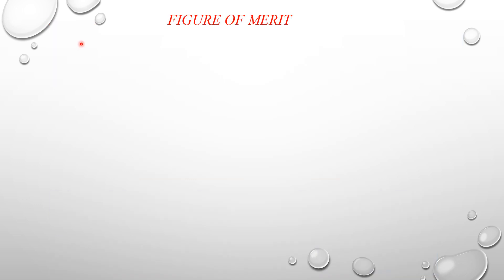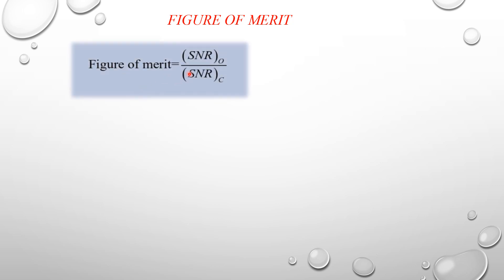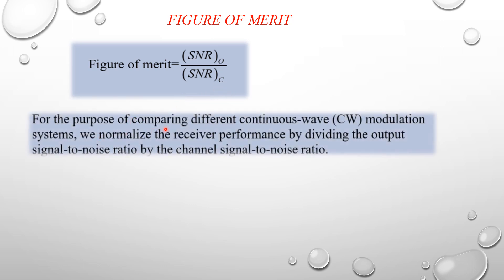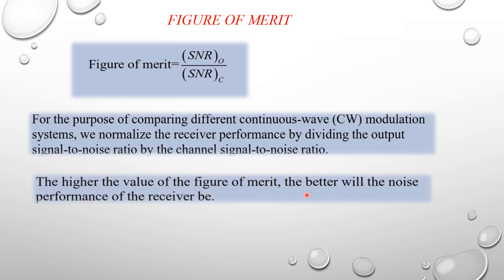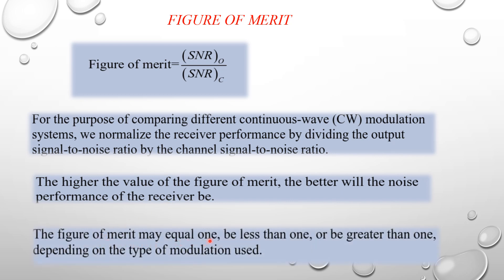The figure of merit of the receiver is defined as SNR_output divided by SNR_channel. For the purpose of comparing different continuous wave modulation systems, we normalize receiver performance by dividing the output signal-to-noise ratio by the channel signal-to-noise ratio. The higher the value of the figure of merit, the better will be the noise performance of the receiver. The figure of merit may equal 1, be less than 1, or be greater than 1, depending on the type of modulation used.